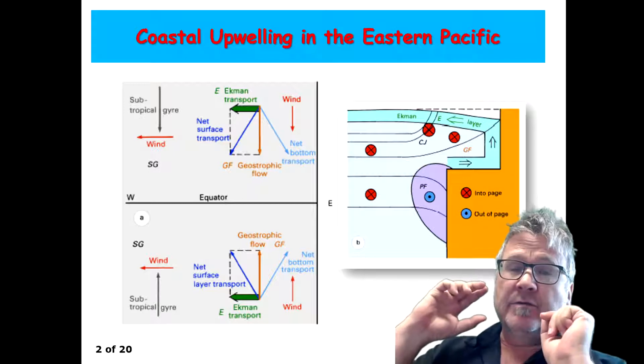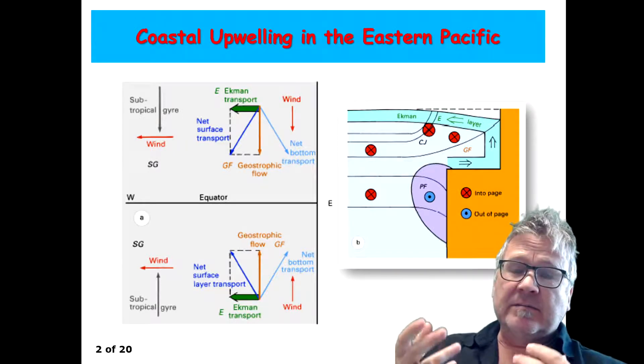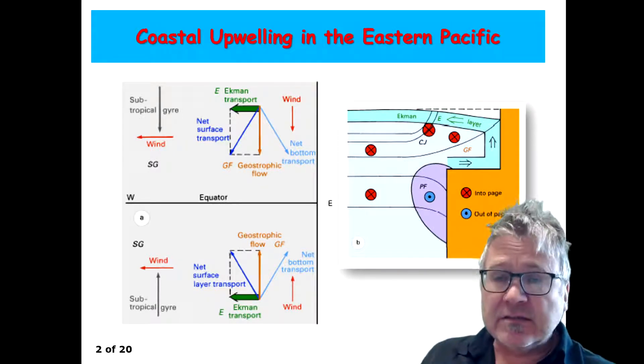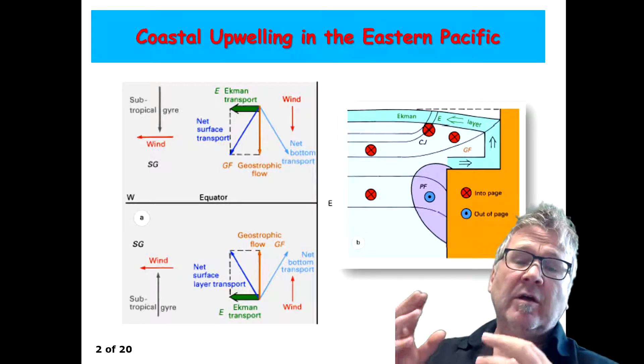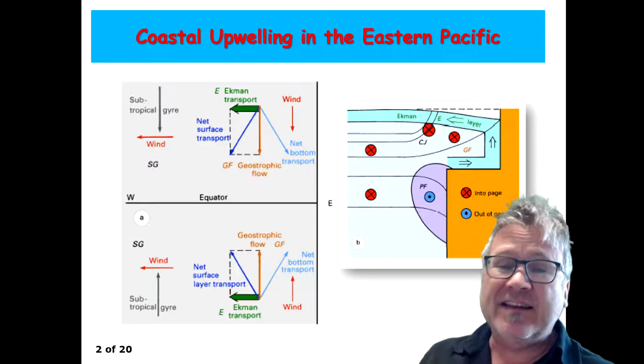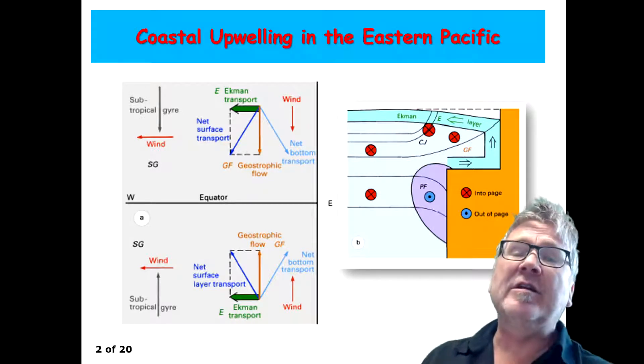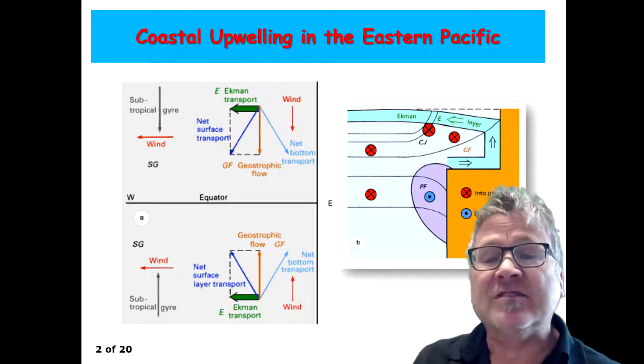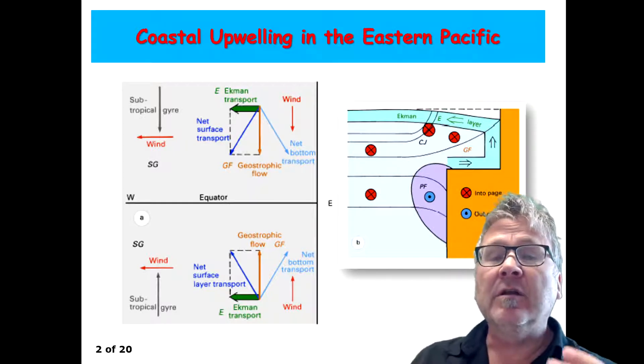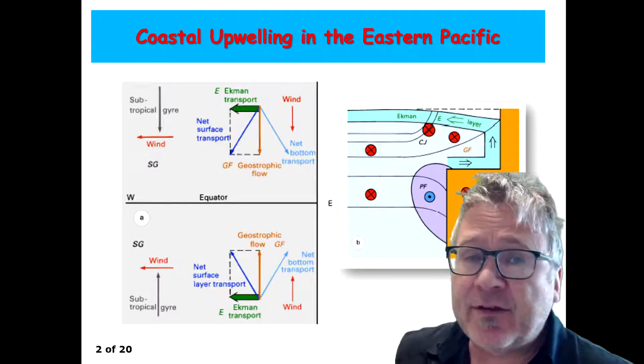And to understand these upwelling systems in the eastern Pacific, you have to know that in these regions, there is a dominant wind component blowing towards the equator, both the northern and the southern hemisphere.